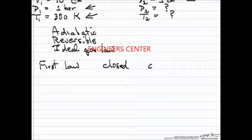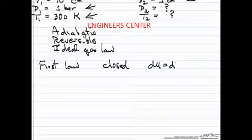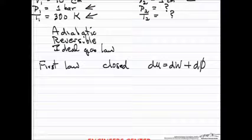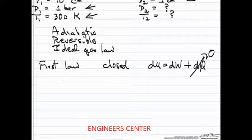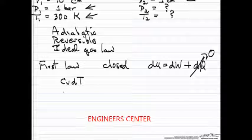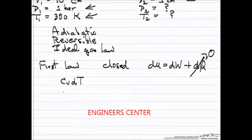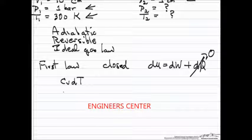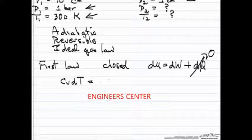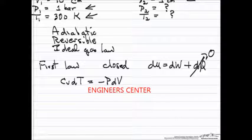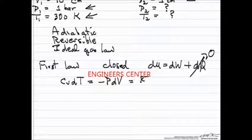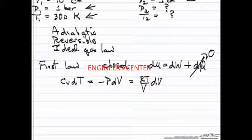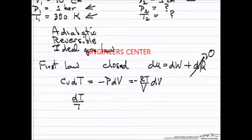So it's a closed system, which means the first law is just dW plus dQ, and of course that's zero. If we write dU as cv dT, and we can do that because it's an ideal gas, it doesn't matter that it's not constant volume, that's always true for an ideal gas. Because it's reversible, we can write work as minus P dV. And then we're going to substitute for pressure in terms of the ideal gas law, and then we're going to separate variables so that we can integrate.